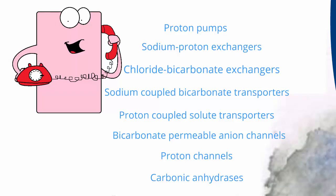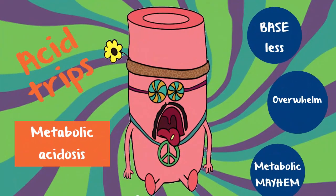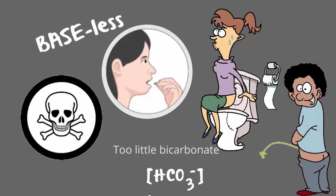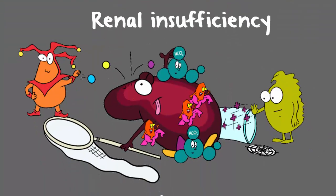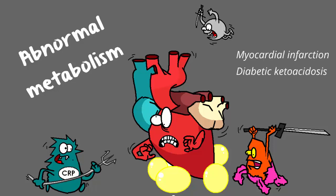So what causes metabolic acidosis? It arises in one of three circumstances: loss of base in the form of bicarbonate via renal or gastrointestinal routes, often precipitated by intoxication; when more acid is produced than the kidneys can excrete because of kidney disease; and when abnormal metabolism causes an excess of acidic substances — this often happens when someone has a heart attack. It's also seen in type 1 diabetics who develop diabetic ketoacidosis, which, for the record, is not the same thing as ketosis.